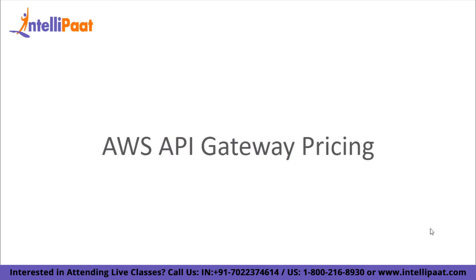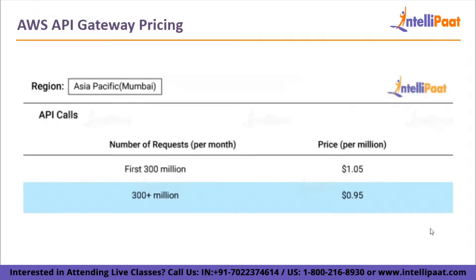Moving on to AWS API Gateway Pricing. You only pay for Amazon API Gateway services when your APIs are in use — there are no minimum fees or upfront payments. The free tier includes 1 million HTTP requests, 1 million REST API calls, 1 million messages, and 750,000 connections per minute. You get this per month for up to 12 months.